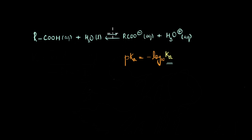And the acid dissociation constant for this reaction, Ka, would be the concentration of the conjugate base of our acid, which is RCOO-, multiplied by the concentration of our H+ ion or hydronium ion, divided by the concentration of our starting acid.